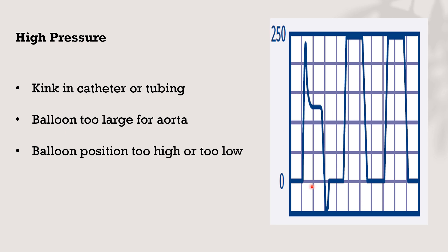This is the normal shape of the balloon. But here we will find a rounded upper tip. So that means high pressure, and this means kink in the catheter or tubing, the balloon is too large for the aorta, or balloon position is too high or too low. So it's creating a rounded tip without plateau pressure and inflation upstroke.